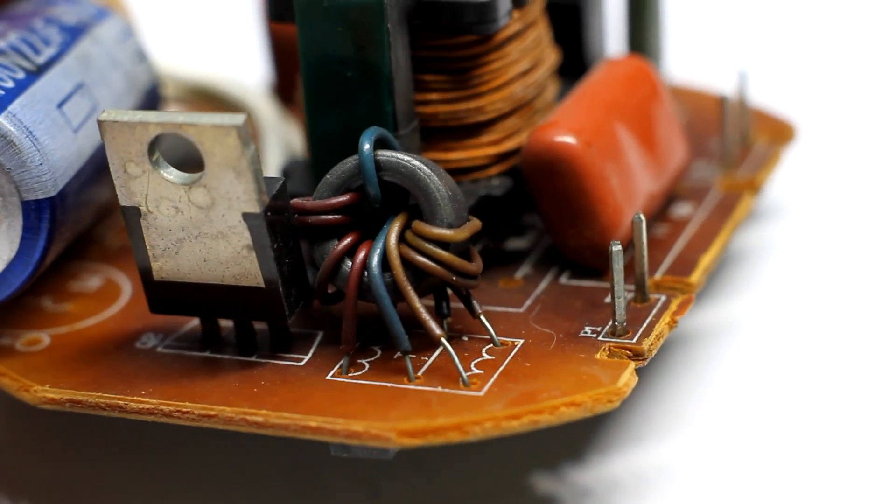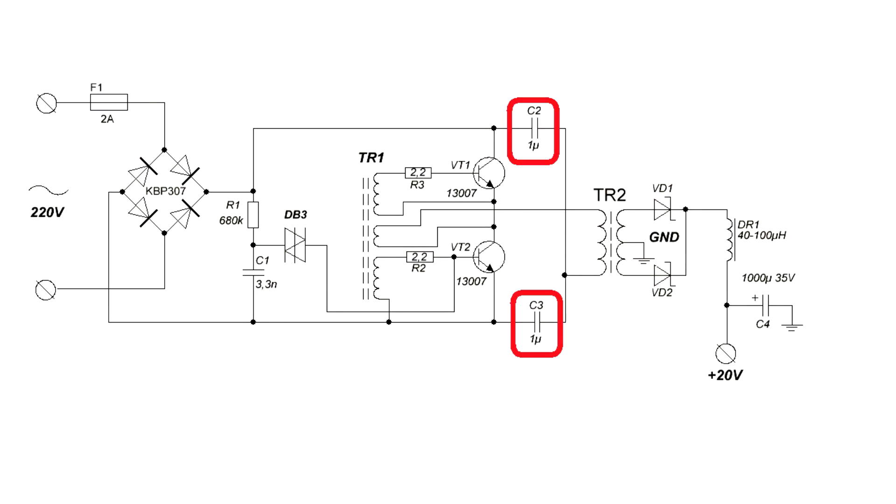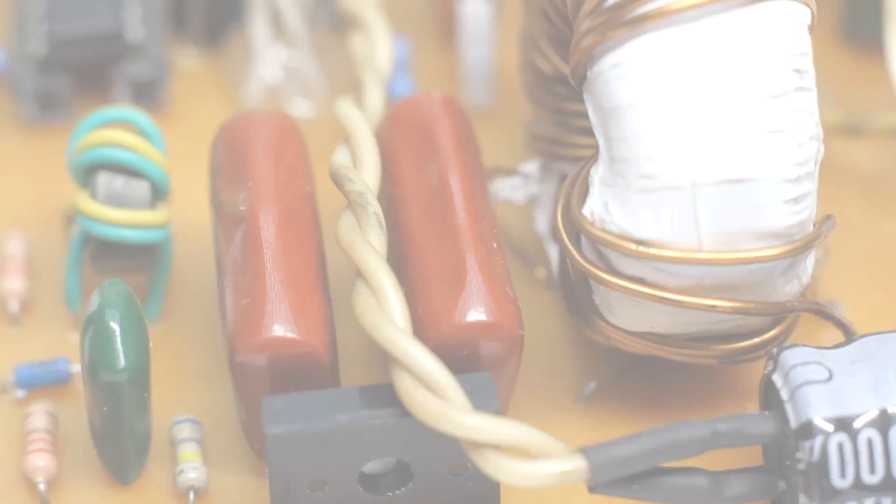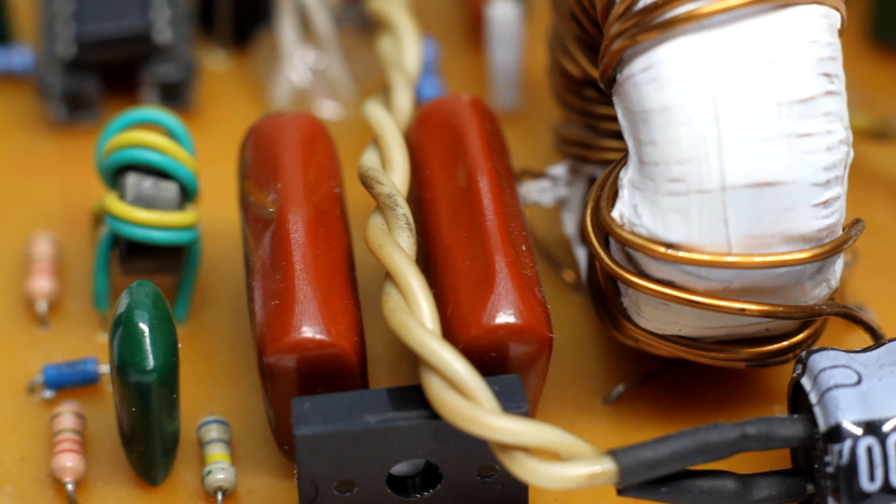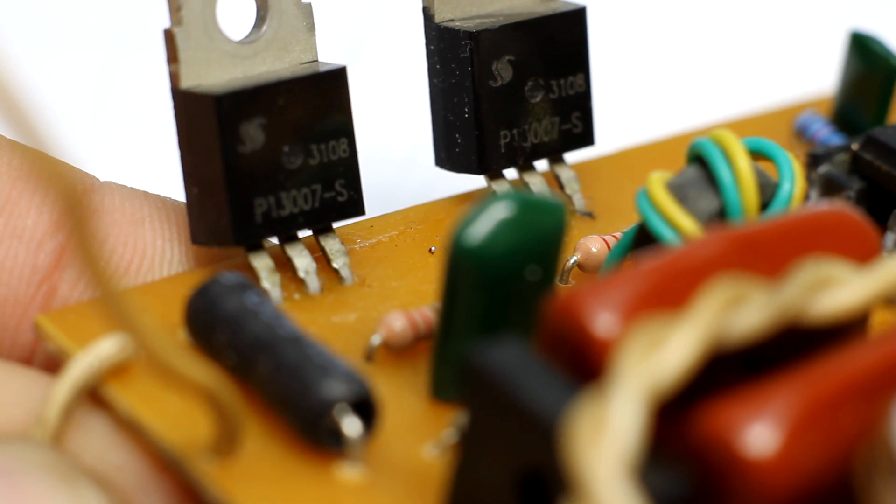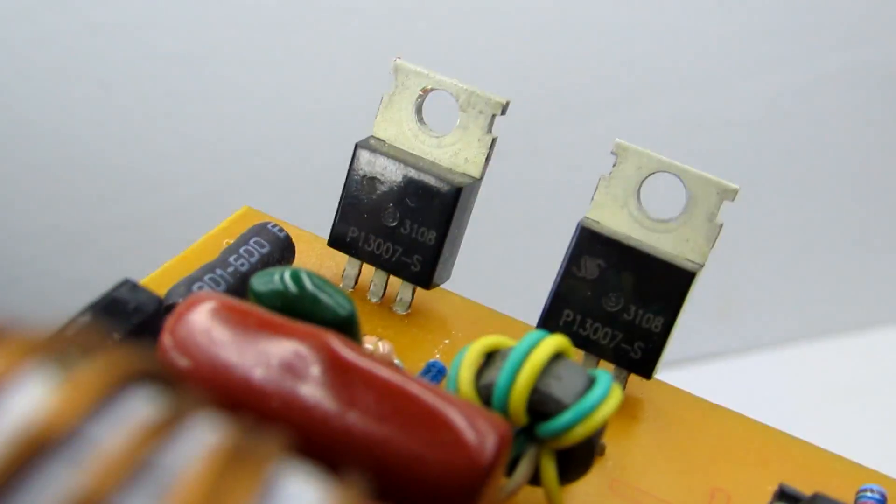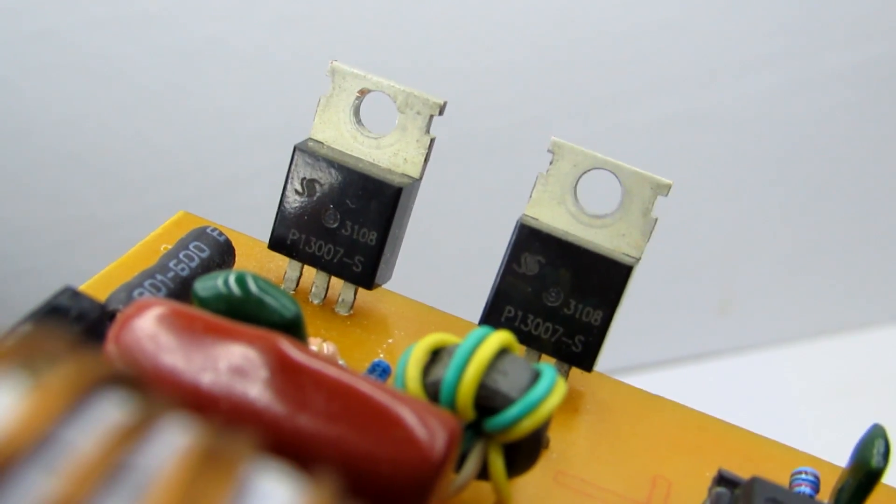These rings can be found on the ballast boards of non-working energy-saving lamps. Half-bridge capacitors must be suitable for at least 250 V. I advise you to take power transistors of the MJE series. You can use MJE13007 through 13009. These are installed in blocks of computer power supply.